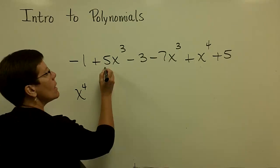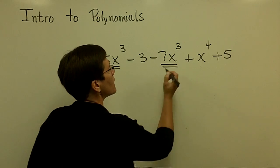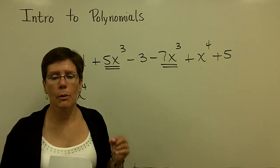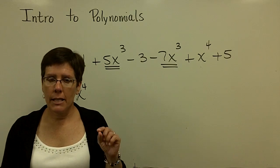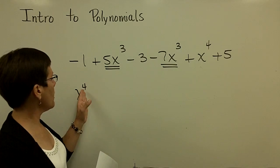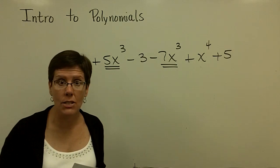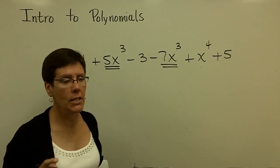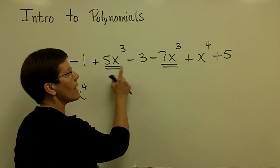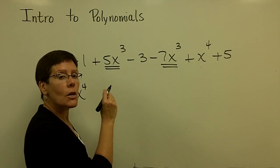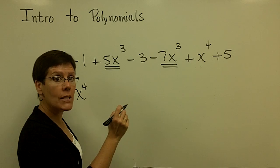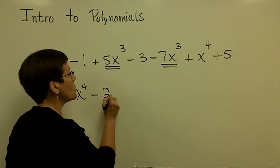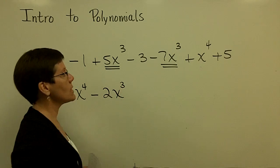So I'm going to write that down first. So I have x⁴. This one and this one are like terms. The variables raised to the same power. And in descending order, I'm working after x⁴, I'm working on the x³ term next. So I have to take their coefficients of a +5 and subtract 7. So 5 - 7 is -2 of those x³.